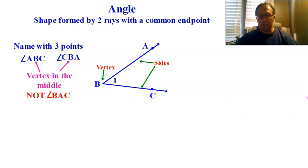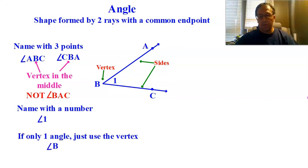All right. Next thing you could call this, you could call this with just a number. Notice it has a number right here in the middle of the angle. I could call this angle 1. Easy peasy. Another thing we could do, if there is only one angle there, we could name it just by the vertex. So I could call this angle B because there's the only one angle B. All right? I don't have lots of angle B's. Just one angle B.